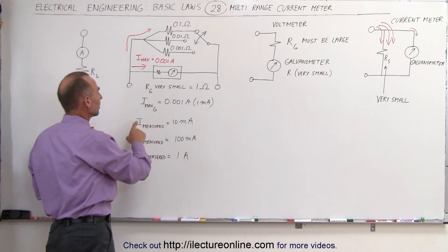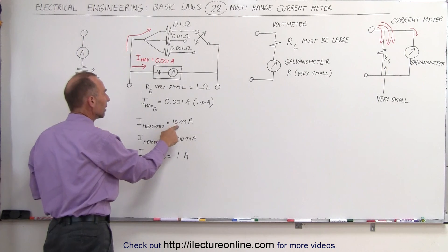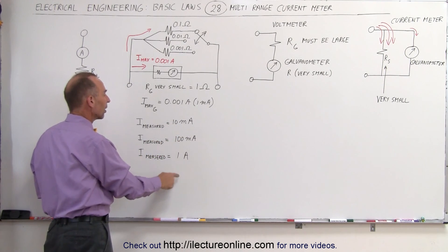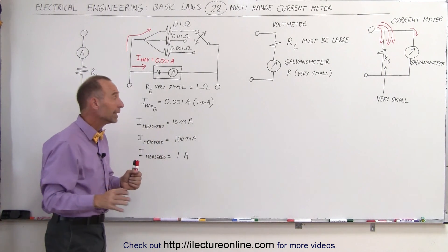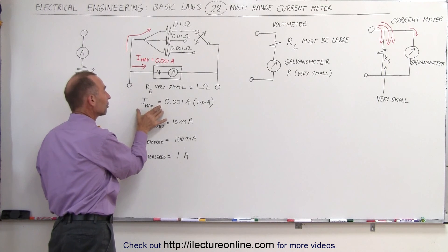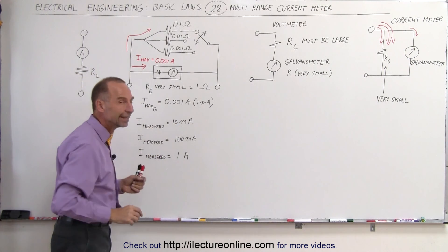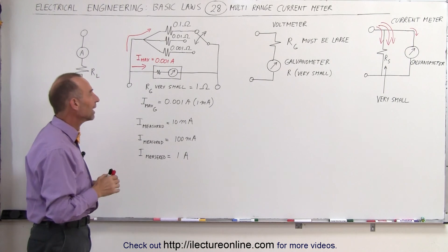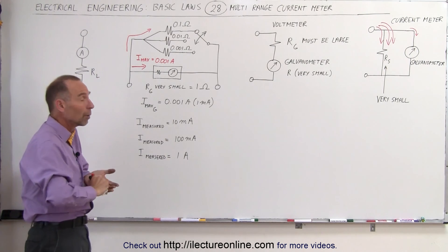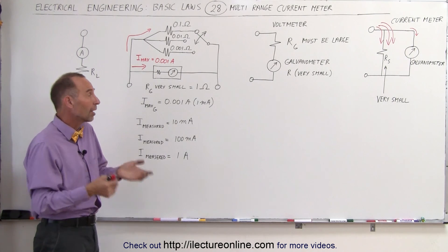Let's say we want a current meter that can measure current up to 10 milliamps, up to 100 milliamps, and up to a full amp, knowing that the galvanometer, the maximum current of the galvanometer, can be no larger than one one thousandth of an amp, which is one milliamp. So we want to be able to measure larger currents. How do we do that?